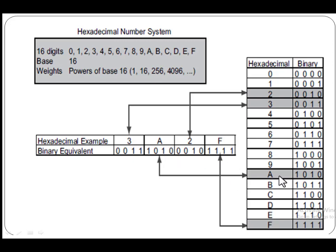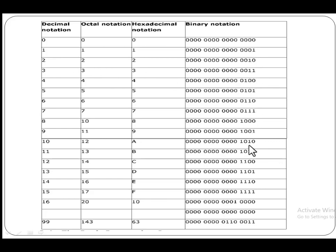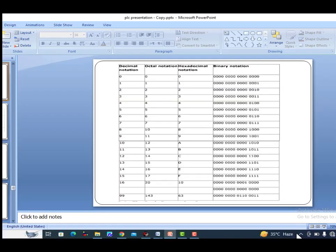In summary, here are the number systems compared: decimal goes 0–9, 10, 11 and so on; octal goes 0–7, then 10–17, then 20, 21, 22 and so on; hexadecimal goes 0–9, then A, B, C, D, E, F, then 10, 11, 12, 13 and so on, with their binary equivalents shown alongside. These number systems are very important to learn about, as they are used to extract and manipulate information. Thank you so much for watching this video.